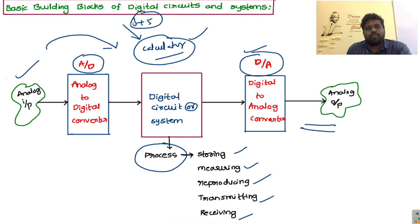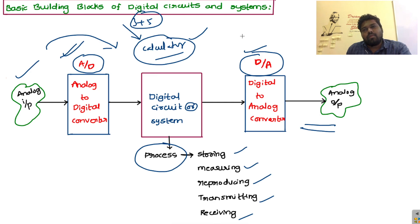If you increase the range of numbers, it becomes difficult for humans to compute — that is why we use a calculator. We provide analog input to the calculator. Inside the calculator, there is an analog to digital converter. Whatever data you provide, the first step is analog to digital conversion. The digital data is then computed by the calculator, which delivers a digital output, then converts it back to analog output. So inside the calculator we have both analog to digital and digital to analog converters.